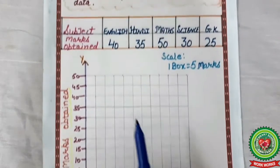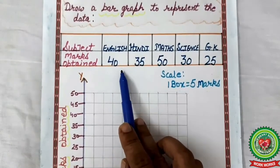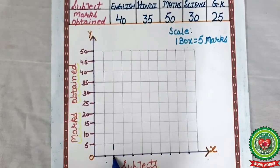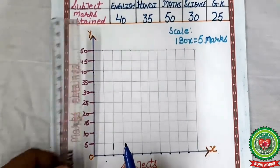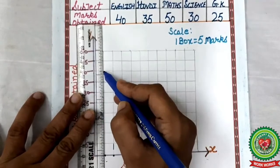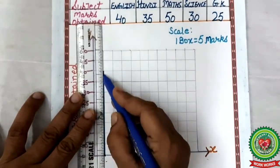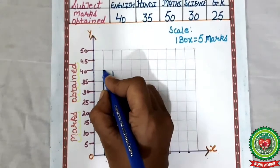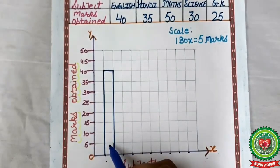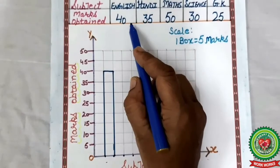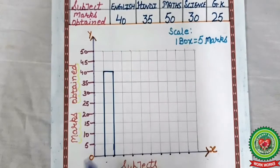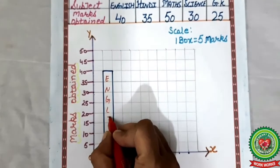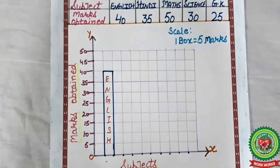Now we will draw the first column. Which is the first subject? English. How many marks? 40. We will take the first two points and draw one line from the first point in front of 40. We will draw one line till 40 and a second line from another point, and join this line. This is the column of English marks and this column is in rectangular shape. You can write English inside the column.